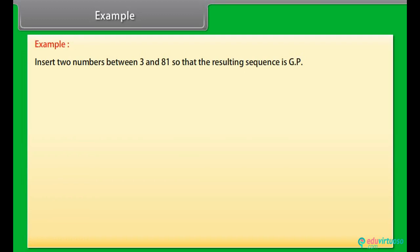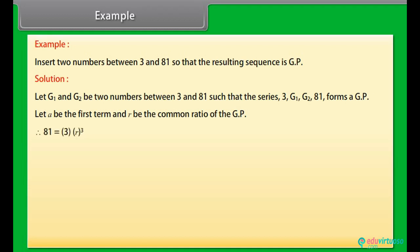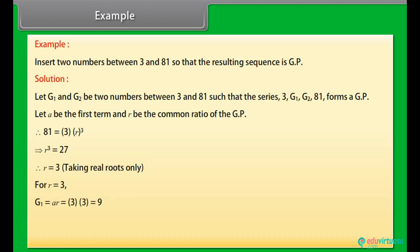Example: Insert two numbers between 3 and 81 so that the resulting sequence is a GP. Solution: Let G1 and G2 be two numbers between 3 and 81 such that 3, G1, G2, 81 forms a GP. Let A be the first term and R the common ratio. Then 81 = 3×R³, implying R³ = 27, so R = 3. For R = 3: G1 = A×R = 3×3 = 9, G2 = A×R² = 3×9 = 27. Thus the required two numbers are 9 and 27.